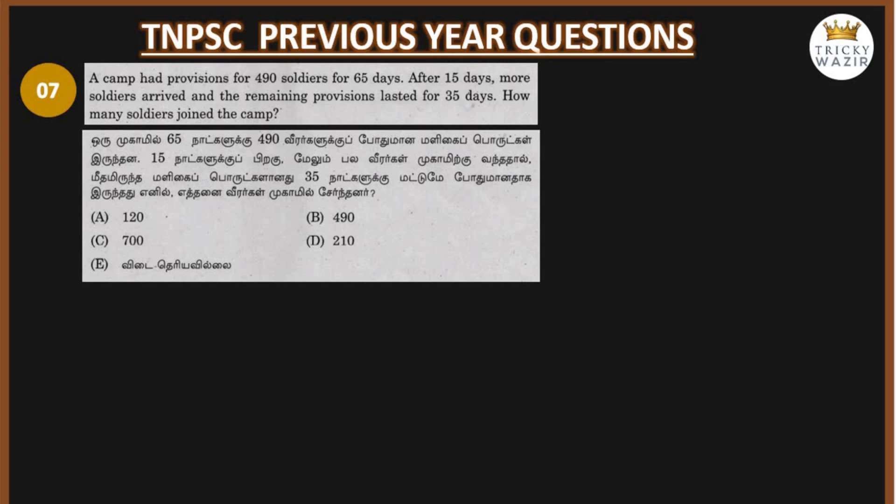Hello guys, welcome to Tricky Vazir. Your camp had provisions for 490 soldiers for 65 days. After 15 days, more soldiers arrived and under the remaining provisions, the food lasted for 35 days.